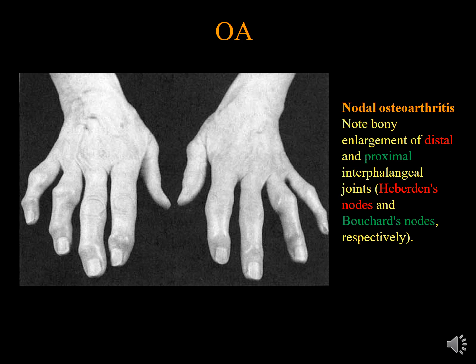Osteoarthritis of the hand causes bony swelling due to osteophytes at the proximal and distal interphalangeal joints. These osteophytes lead to nodules at the distal interphalangeal joints called Heberden's nodules, and nodules at the proximal interphalangeal joints called Bouchard's nodules. These nodules are specific to Osteoarthritis and do not occur in any other disease. Unlike rheumatoid arthritis, deformities in Osteoarthritis do not follow a specific pattern such as boutonnière or swan neck deformity.